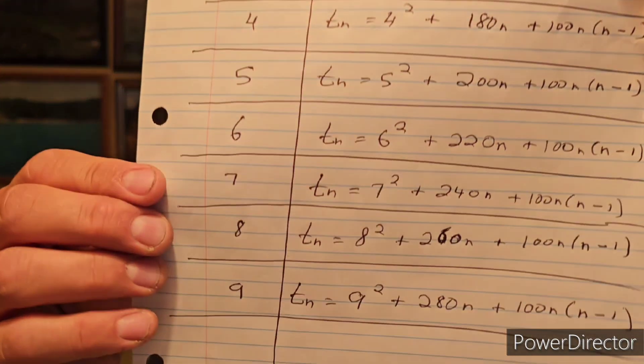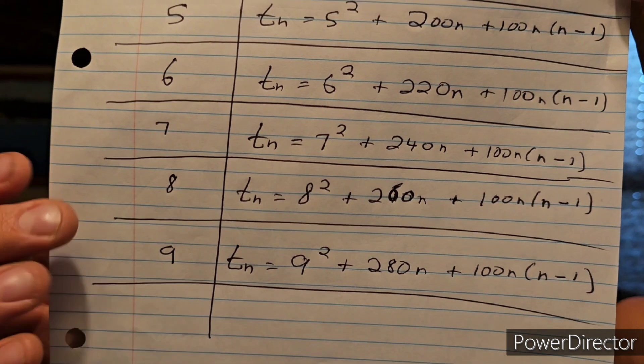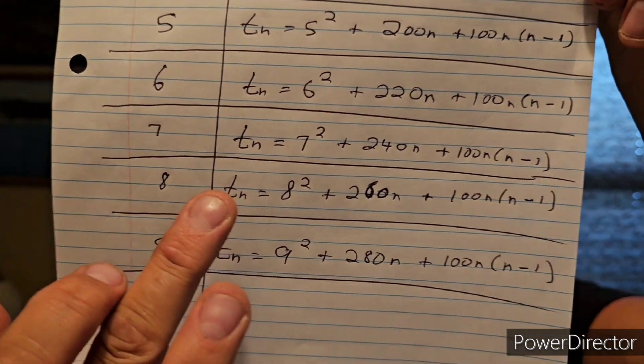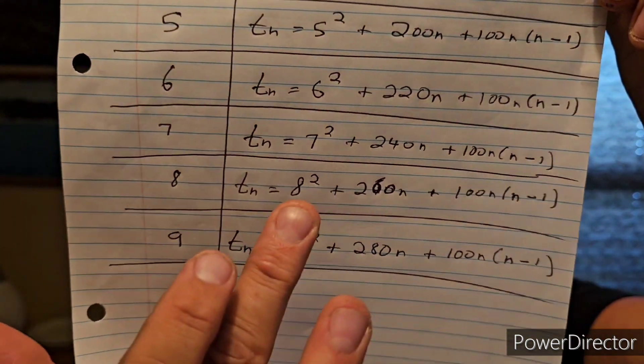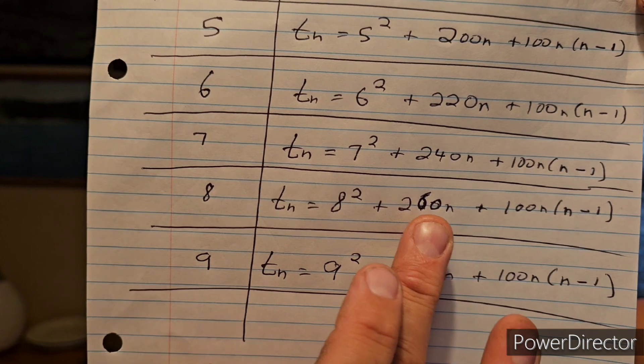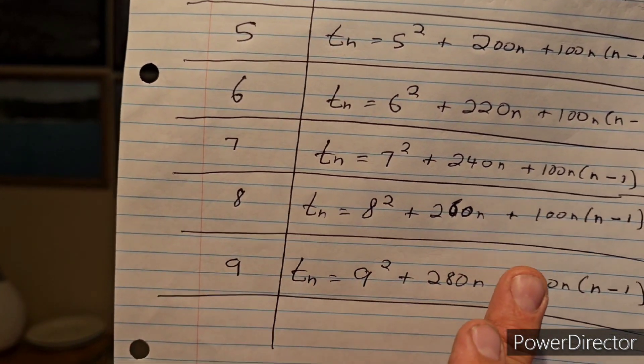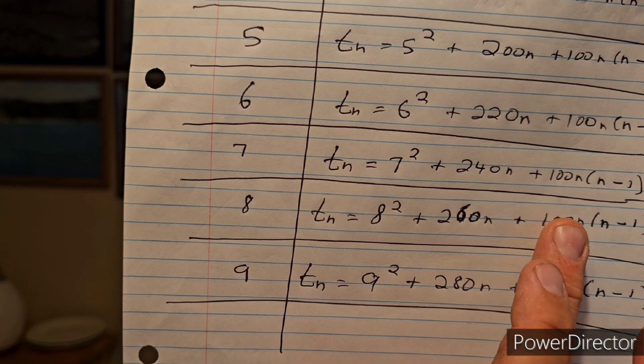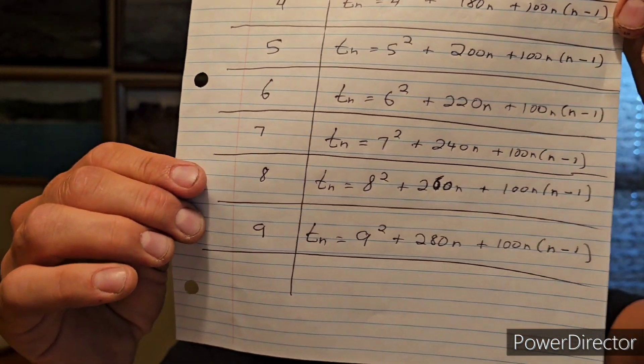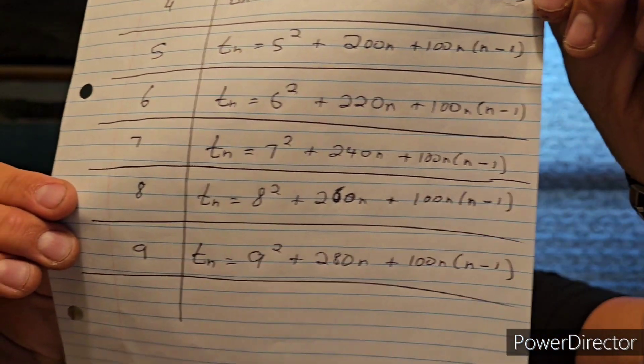Now, let's do a number ending in 8. Let's do 28 squared. That means it would be 8. So it would be T2. And it would be 8 squared plus 260 times 2. That would be 520 plus 64. It would be 584 plus 100 times 2 times 1. That's 784. And you guessed it, folks. That is 28 squared.